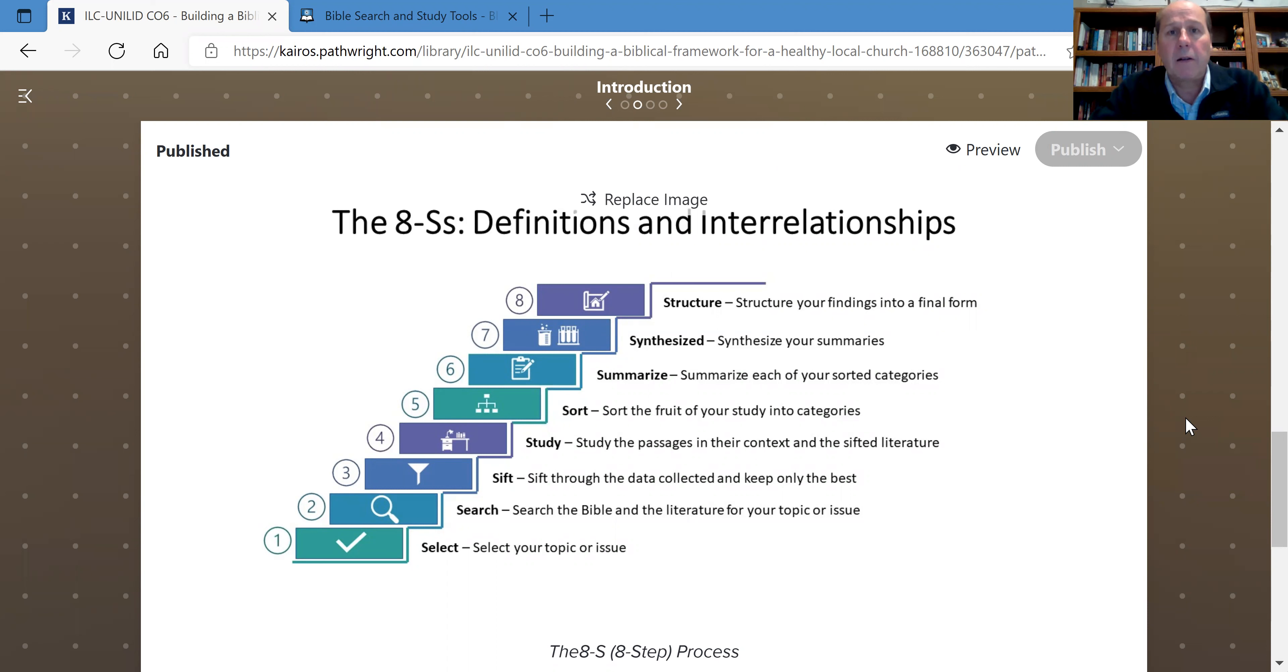You're going to select your topic, and clearly our topic has been selected, which is the church. Second, you're going to do a full Bible search on that topic. We're going to introduce you to a tool, the Blue Letter Bible, on how you can do that.